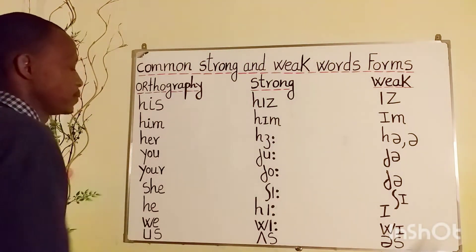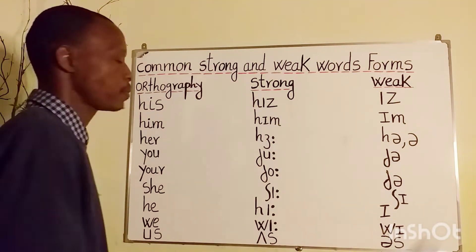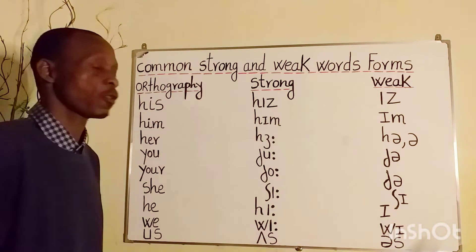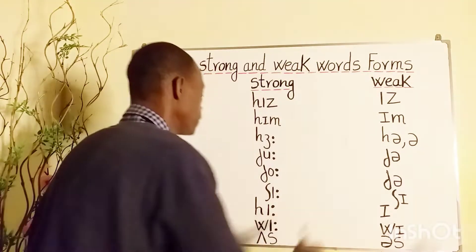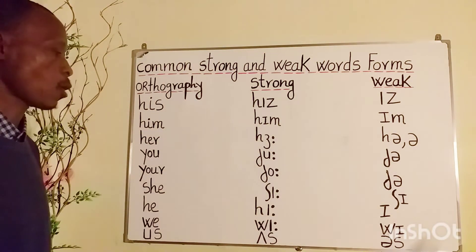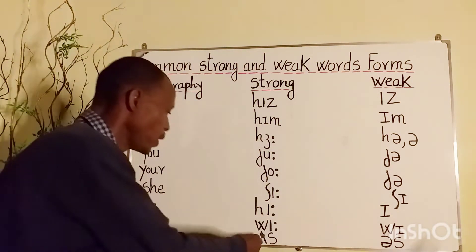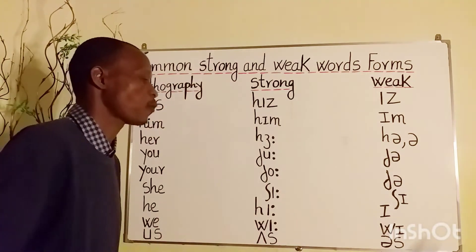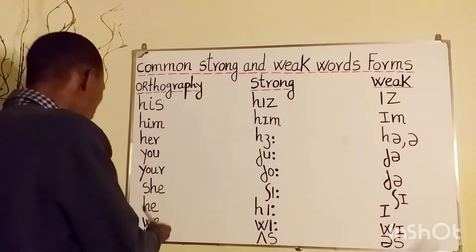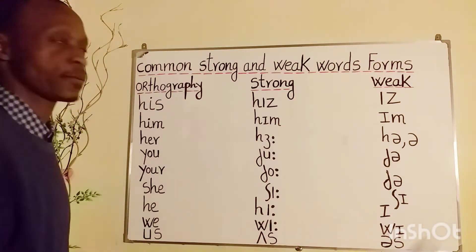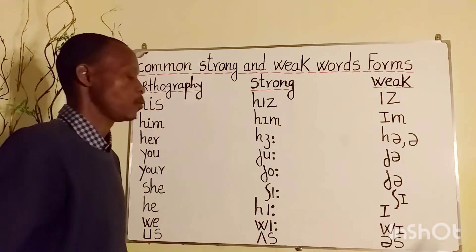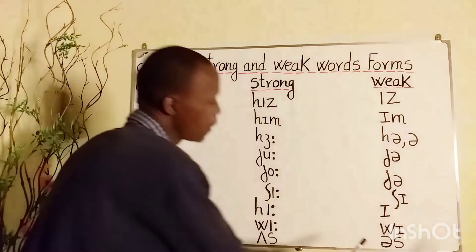'He' — strong form: he, weak form: e. 'We' — strong form: we, weak form: we. 'Us' — strong form: us, weak form: s.